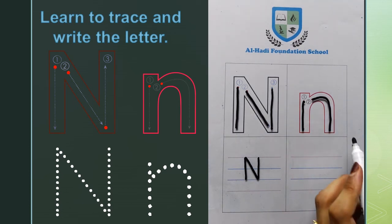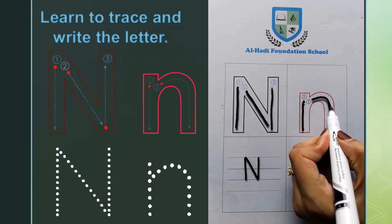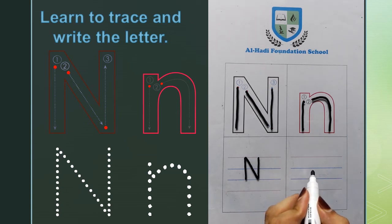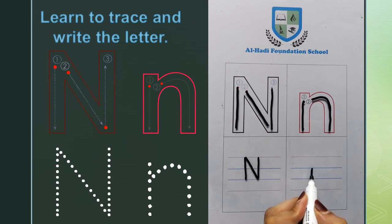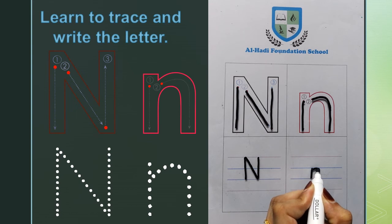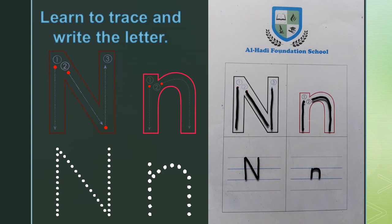Now we will learn to write small n following the writing pattern. Small n will be written in the middle of the two lines. Start from the other line with a downward straight line. Then, from slightly below the second line, make a curve shape, then a straight line. This is how we trace and write capital and small n.